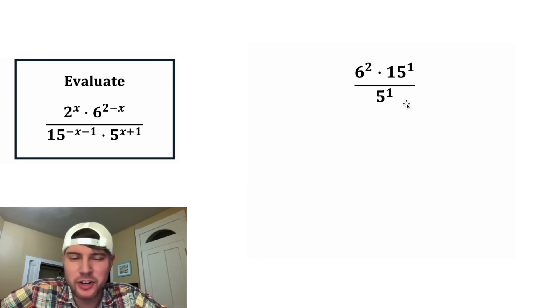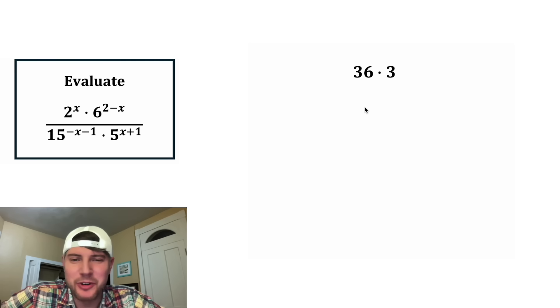The 1 exponents aren't doing anything. 15 to the 1 is 15. And 5 to the 1 is 5. And then 15 and 5 are both divisible by 5. So this simplifies to 3. 6 squared is equal to 36. And 36 times 3 is 108.